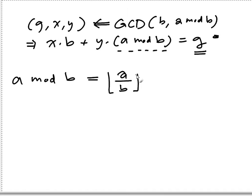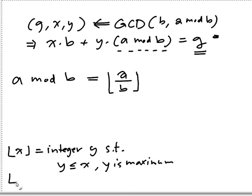So that's the division. And the floor of x is integer y such that y is at most x, and y is maximum. So the floor of 0.9 is 0. The floor of 2 is 2. The floor of minus 1.8 is minus 2, basically.